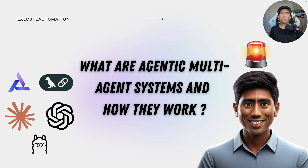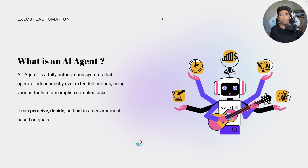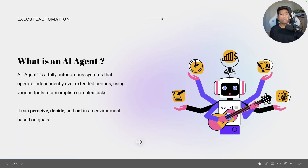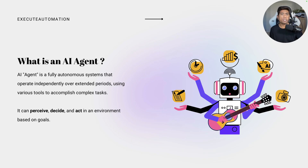We have already talked about what an AI agent is and what they really do. If you haven't watched that video, I'll give you a quick summary. An AI agent is a fully autonomous system that operates independently over an extended period using various tools to accomplish a task. It can perceive, decide, and act in an environment based on the goal that you give it.